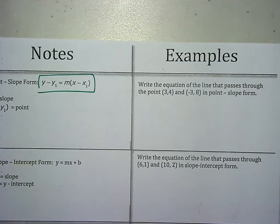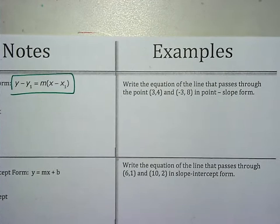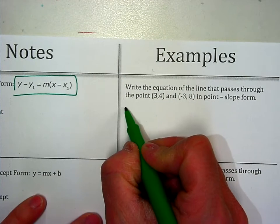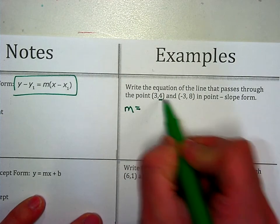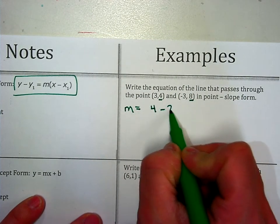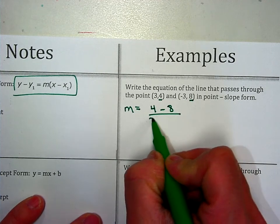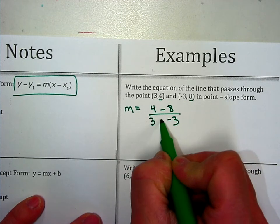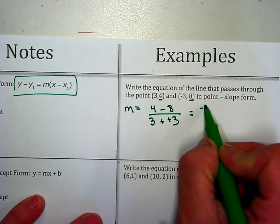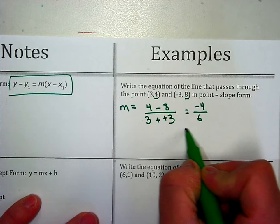So I notice I have two different points, but notice that I do not have the slope. So first thing I'm going to do is find the slope. So I'm going to take the 2 y's, subtract them, 4 minus 8. Subtract the two x's, 3 minus negative 3, which is really a plus. So this is negative 4 over 6, and this becomes negative 2 thirds.